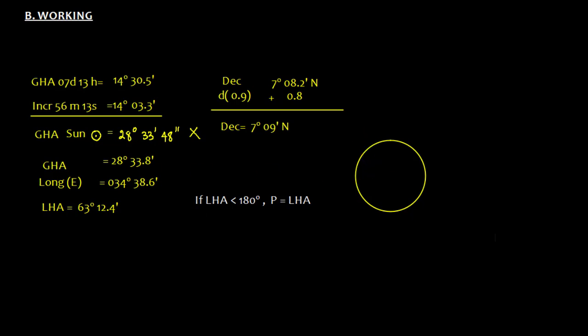Now we need to find angle P. For finding the angle P, you need to realize suppose this is your 0 degree, this is your 90 degree, this is 180 degree, and this is 270 degree. That is how the LHA is going to move. So LHA here is 63 degree, that means it is somewhere here.